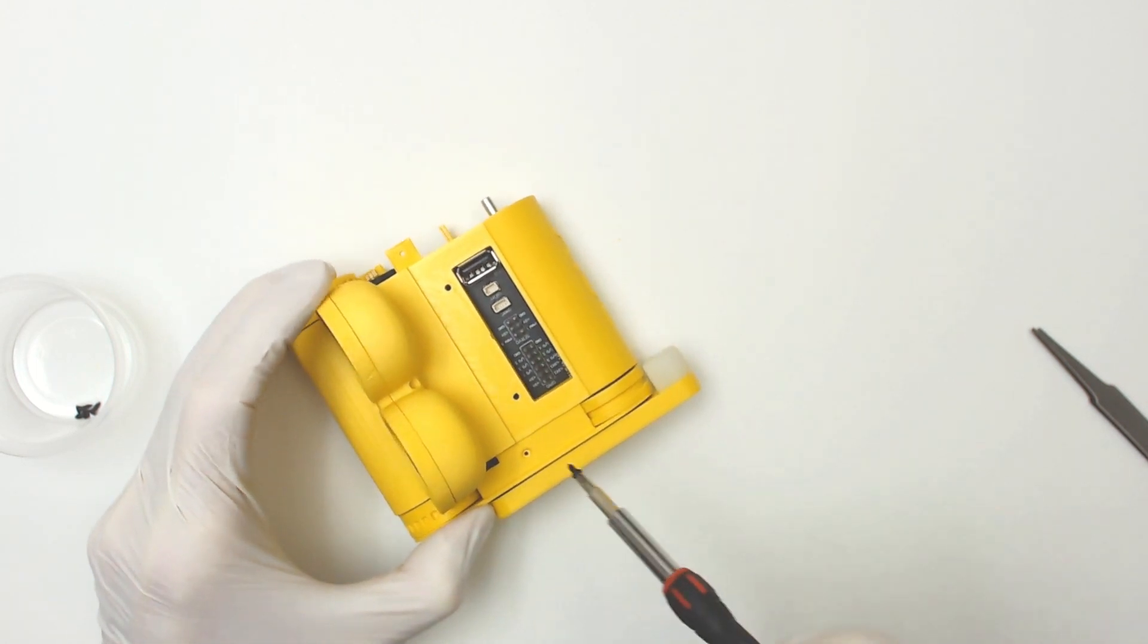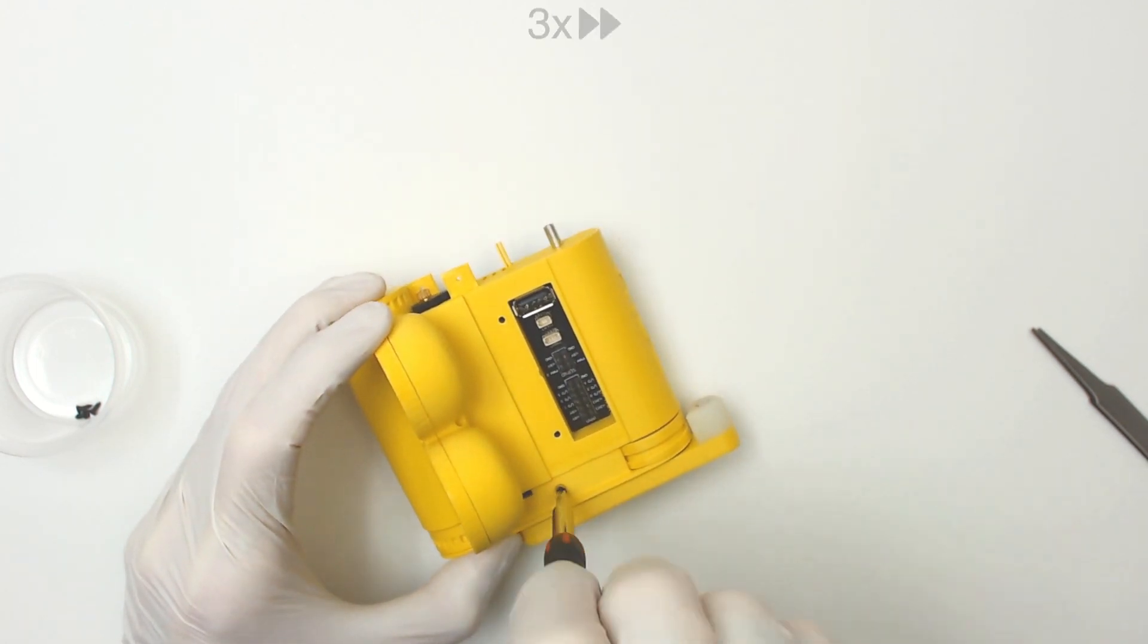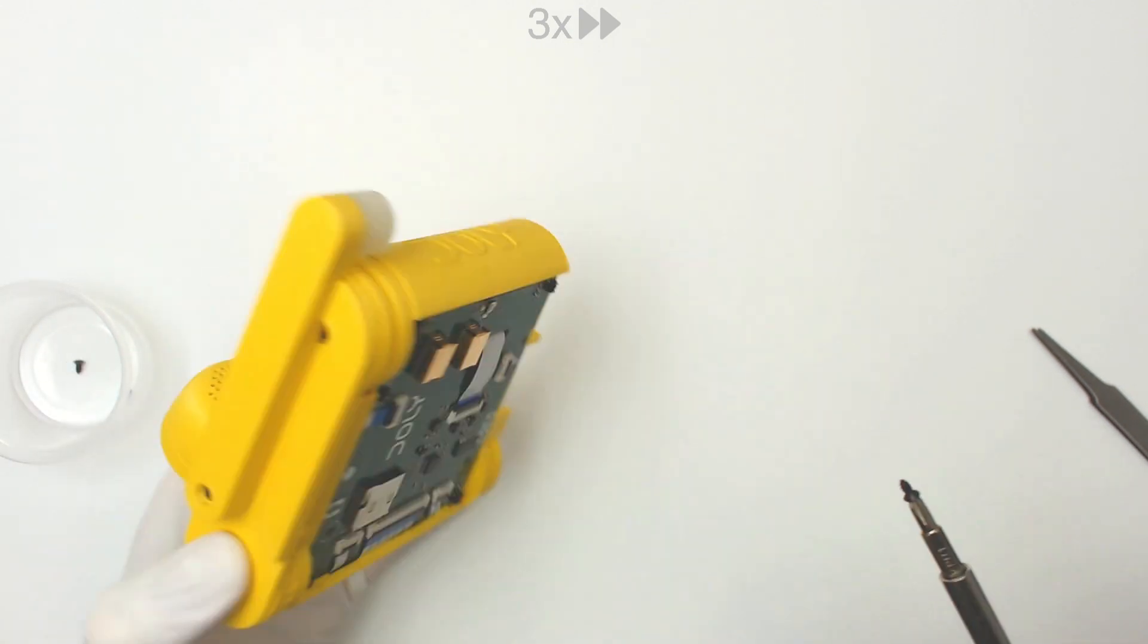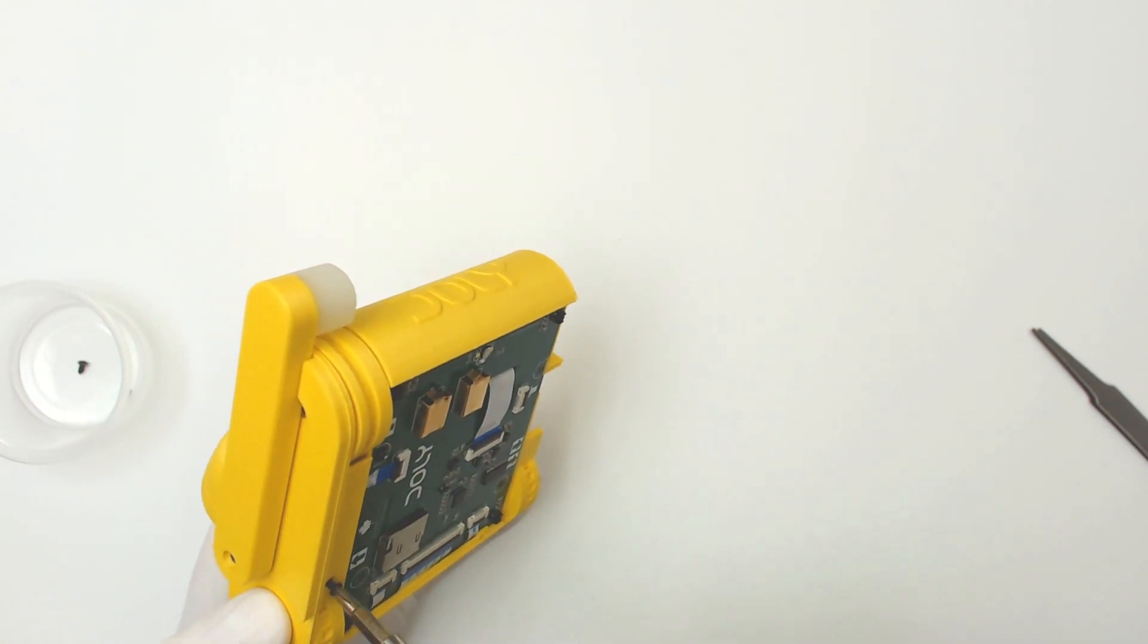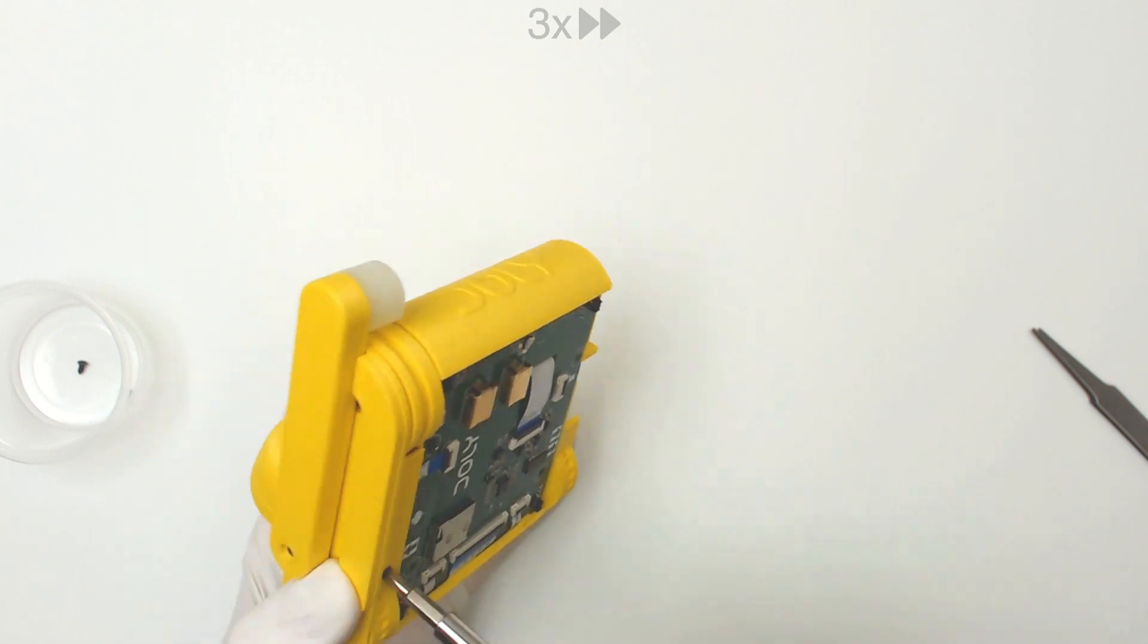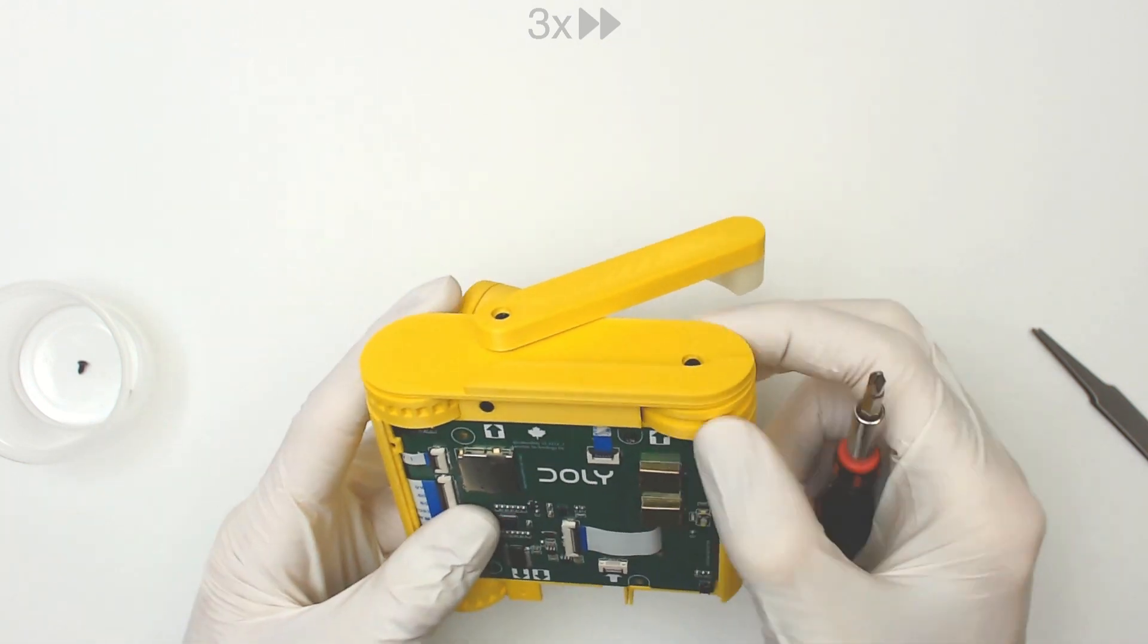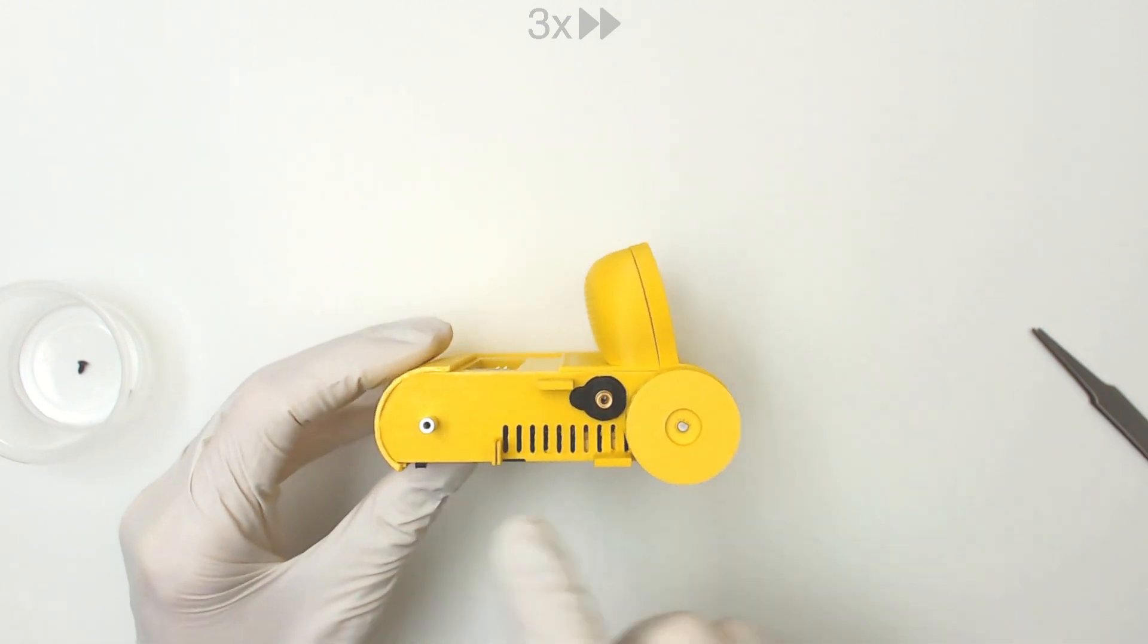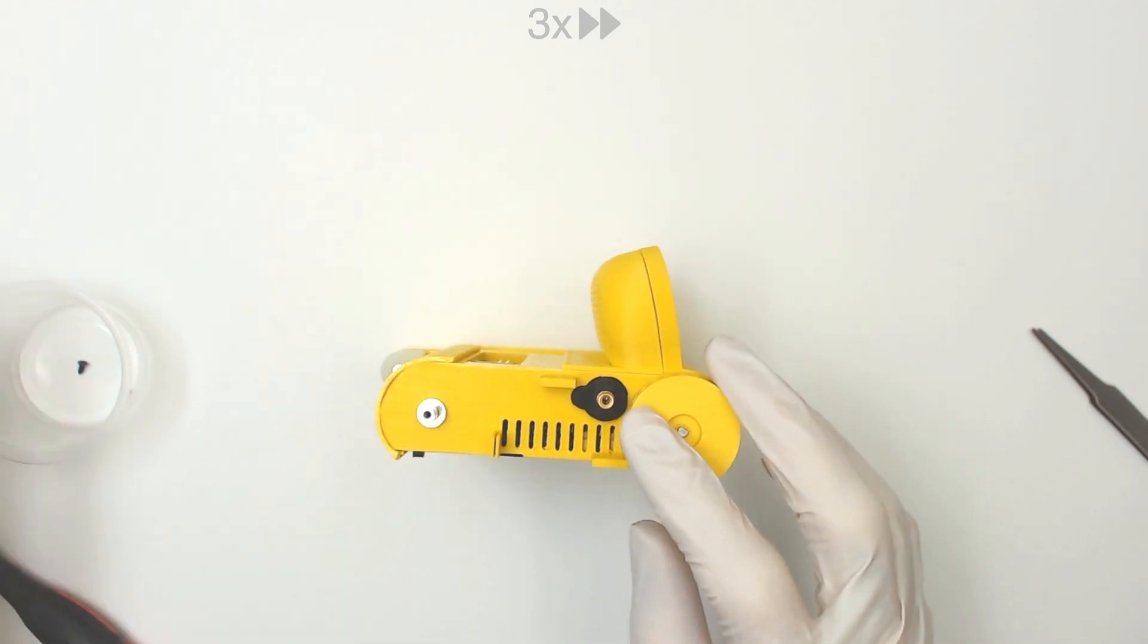Secure the track cover with two 5 mm screws. The same process should be repeated on the other side as well.